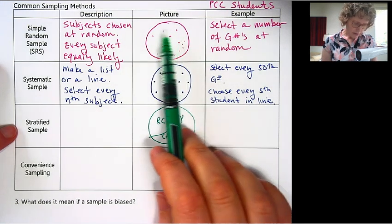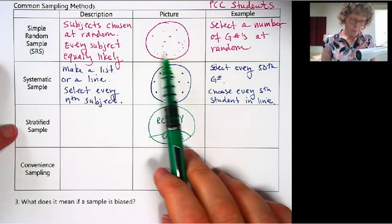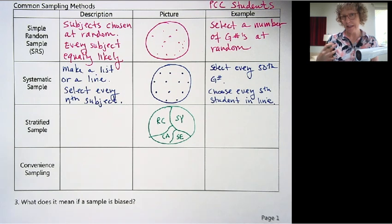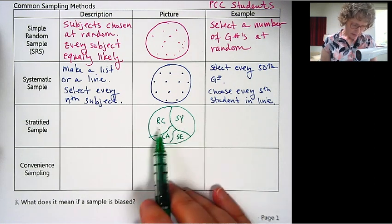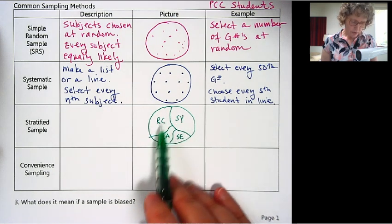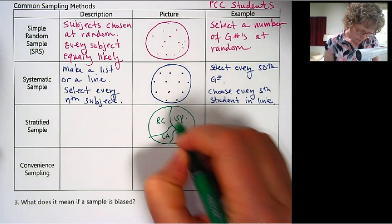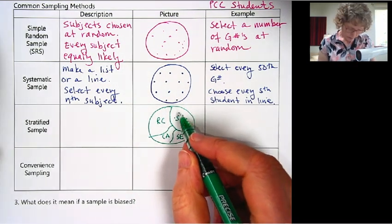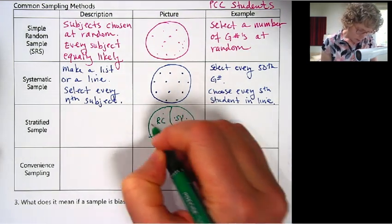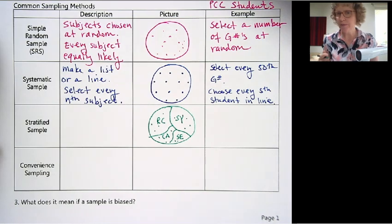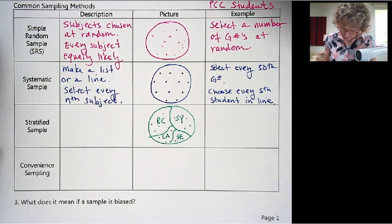Instead of just sort of taking a chance with the simple random sample, we might not proportionally get each campus represented. And so the stratified is a way to divide into categories, or strata, and then select proportionally from each campus. So we could select a simple random sample just out of Sylvania, a simple random sample out of Rock Creek, a simple random sample out of Cascade, and a simple random sample out of Southeast.